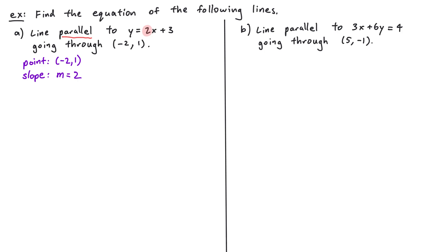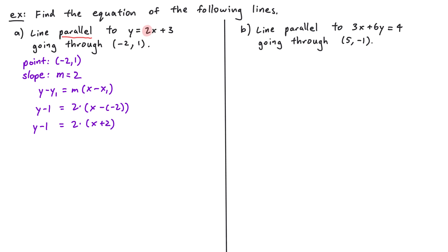With the point and slope identified, we write the equation using point-slope form: y - y₁ = m(x - x₁). Plugging in, we get y - 1 = 2(x - (-2)), which simplifies to y - 1 = 2(x + 2). Distributing gives y - 1 = 2x + 4, and adding 1 to both sides gives y = 2x + 5. So y = 2x + 5 is the equation of the line parallel to y = 2x + 3 that goes through (-2, 1).